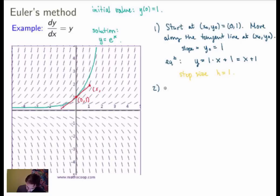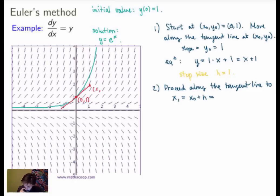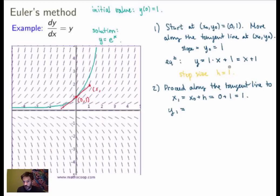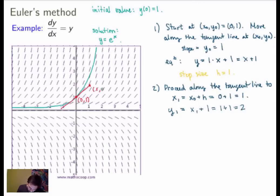We move along the tangent line to the new point x₁ = x₀ + h. Since x₀ was 0 and the step size was 1, the new x-coordinate is 1. Now we need to find the y-coordinate y₁. Since this new point lies on the tangent line y = x + 1, we substitute x₁ = 1 to get y₁ = 1 + 1 = 2. So the new point has y-coordinate 2.